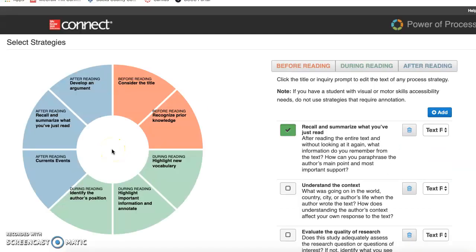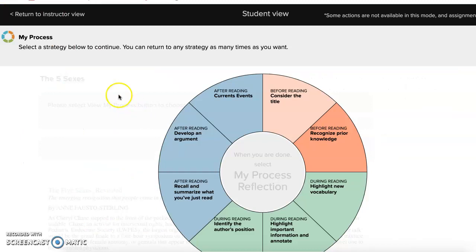You'll see that our reading wheel is complete here. So we're going to assign it and then look at it from the student's view. So when students come into the assignment, they are going to be asked to select a strategy and be informed that they can return to any strategy as many times as they want.